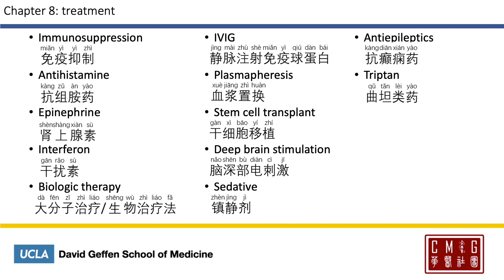Plasmapheresis is 血浆置换, 血浆 meaning plasma. Stem cell transplant is 干细胞移植. Deep brain stimulation is 脑深部电刺激. Sedative is 镇静剂. Anti-epileptics is 抗癫痫药, and triptans is 曲普坦类药.